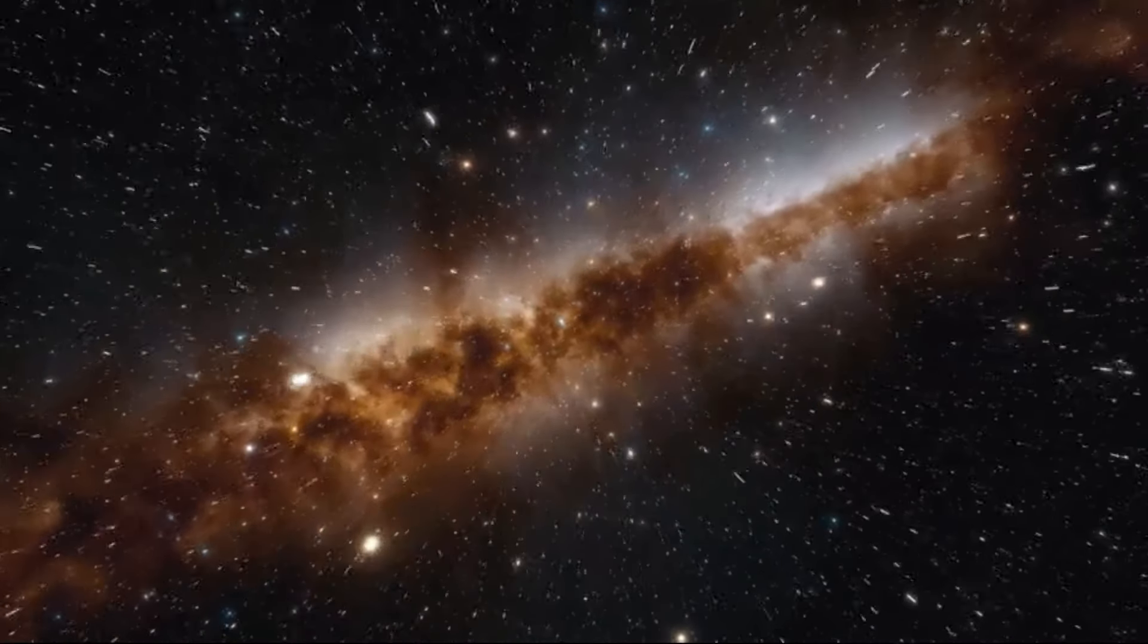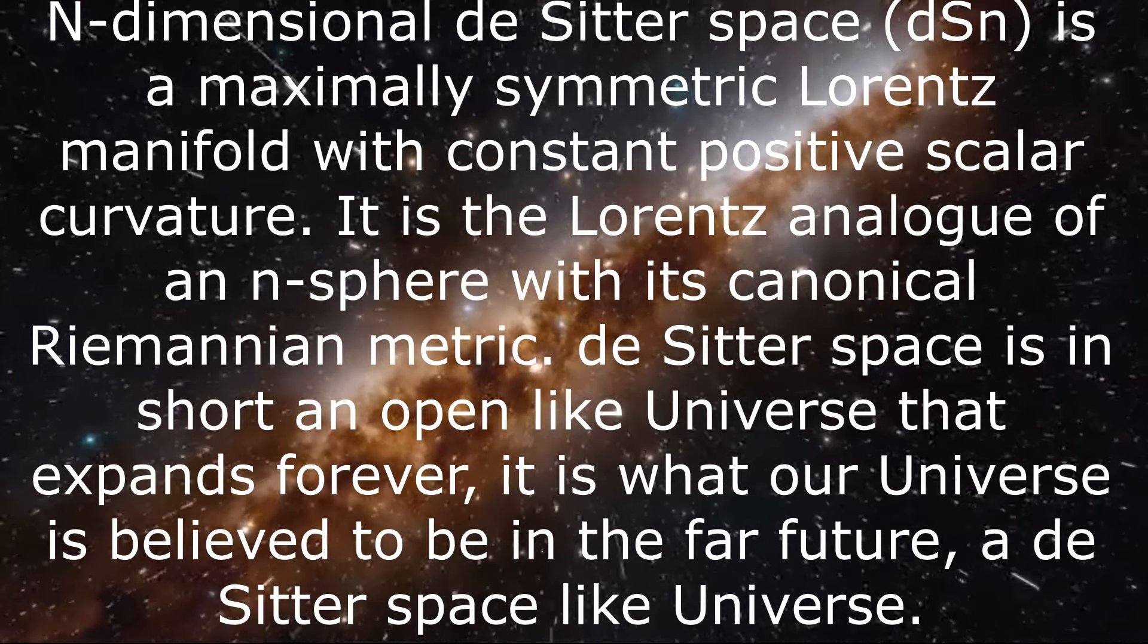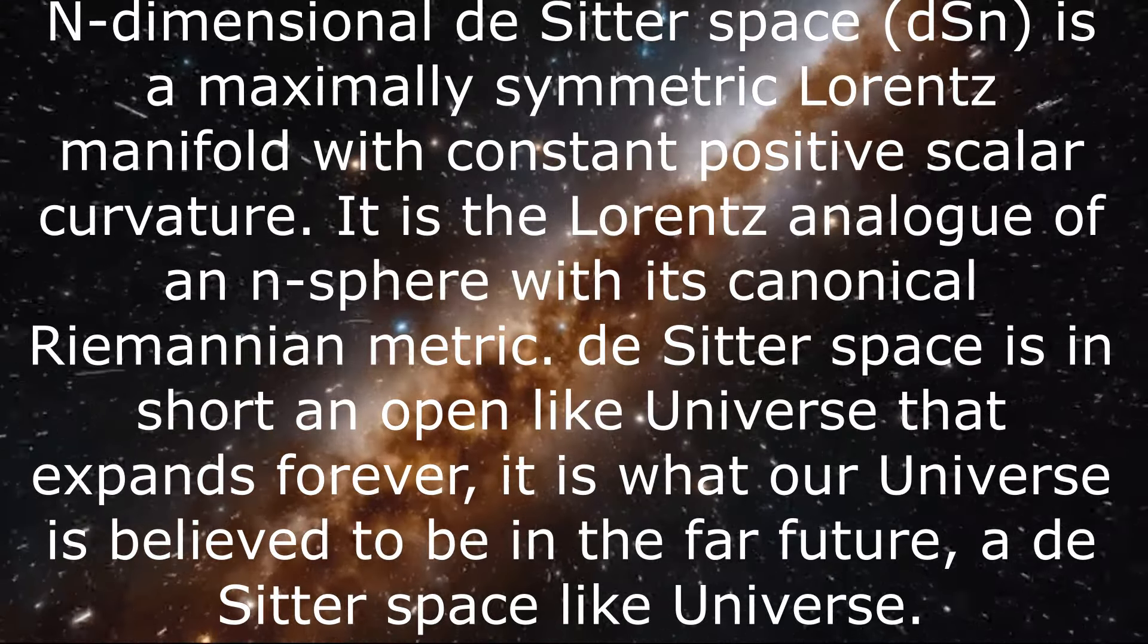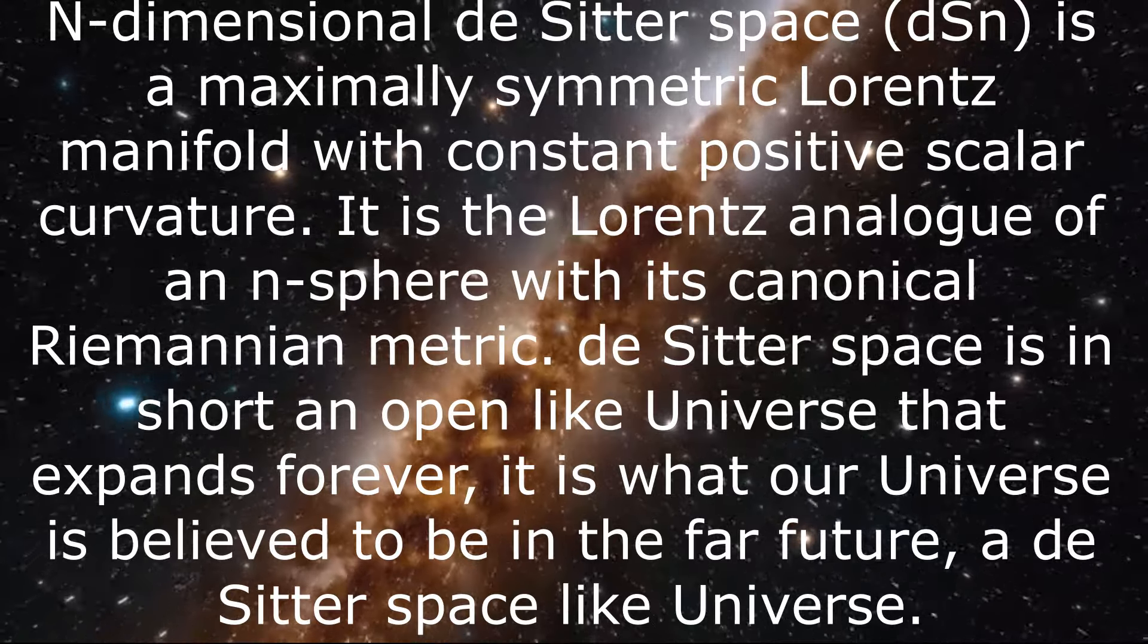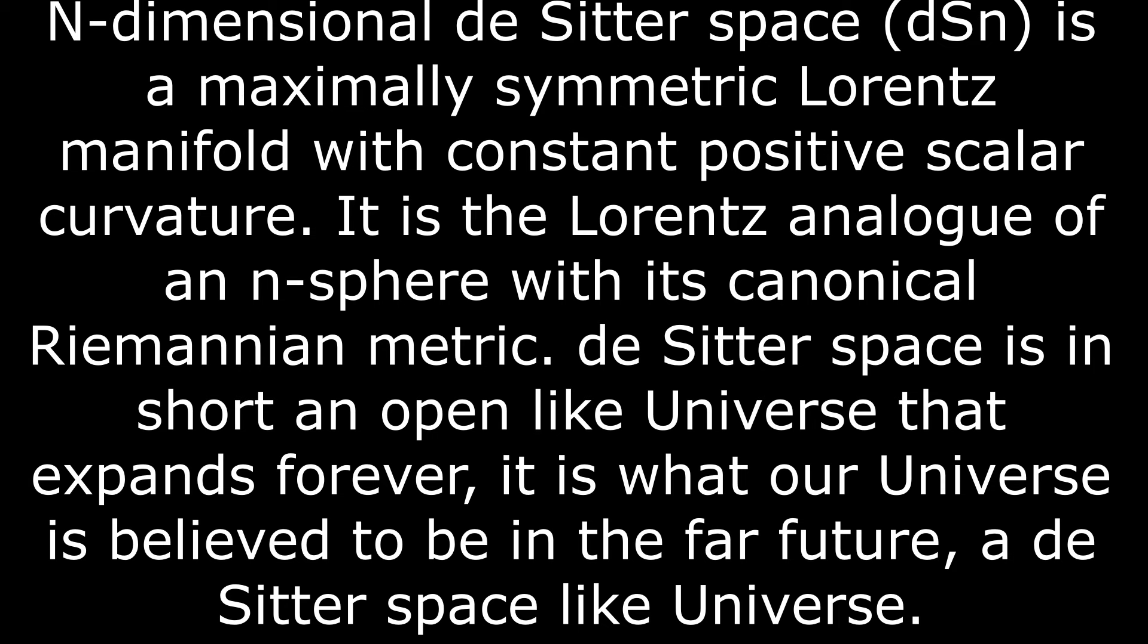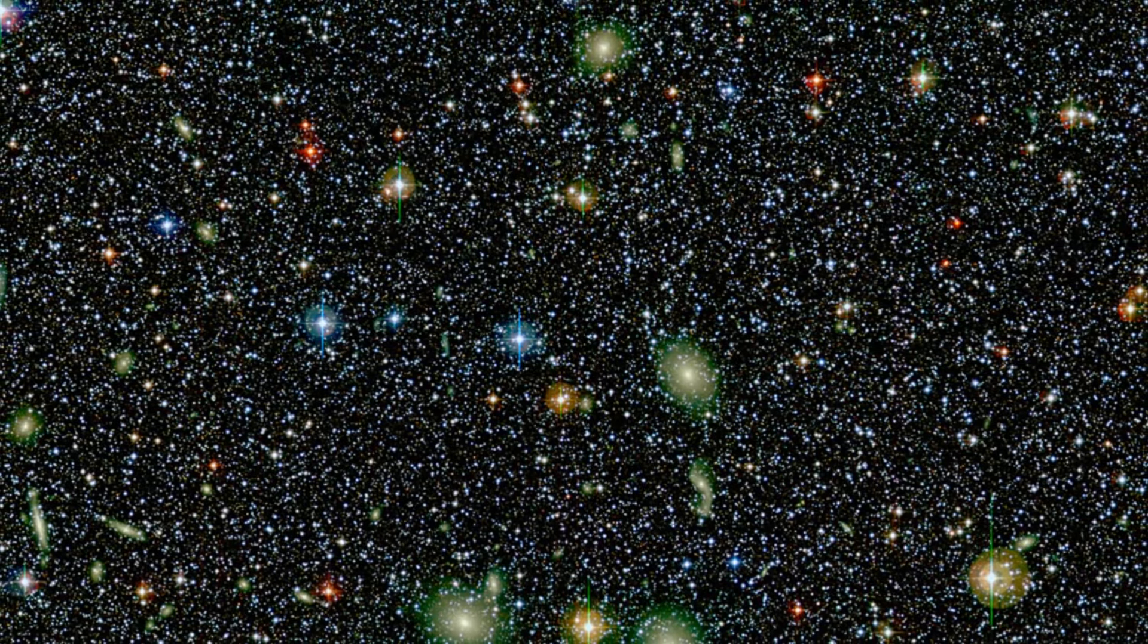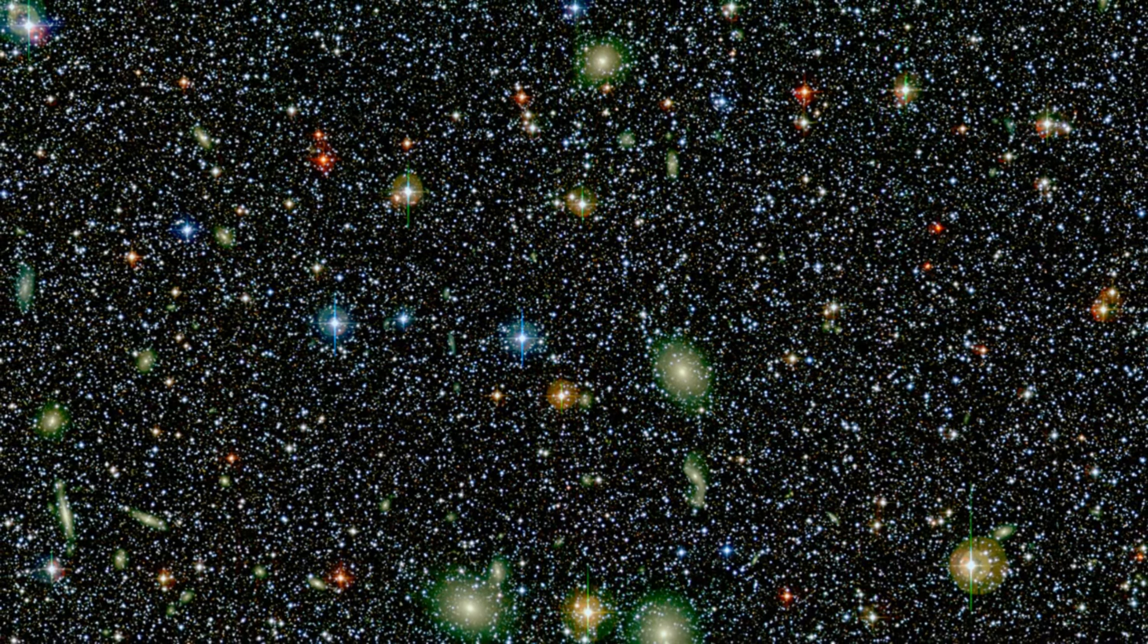In mathematical physics, n-dimensional de Sitter space is a maximally symmetric Lorentzian manifold with constant positive scalar curvature. This is the Lorentzian analog of an n-sphere with canonical Riemannian metric. What the heck all of this means after all? Well, this is the reason that I keep the math at minimum, but important is to keep in mind that in de Sitter space, the universe is expanding at an accelerating rate due to dark energy and it serves as a useful model for understanding the behavior of the universe.